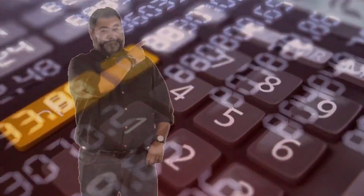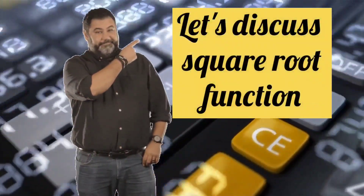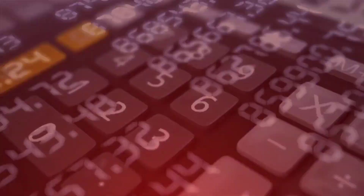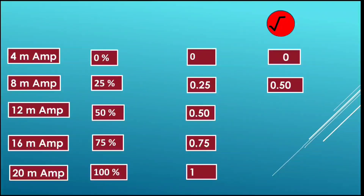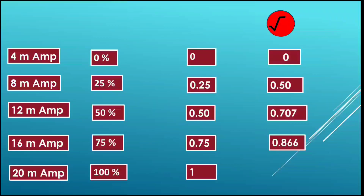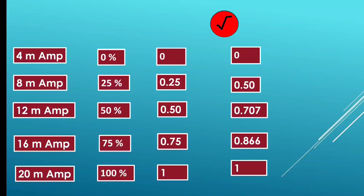Let us now understand the square root function according to the normalized values. The square root of 0 will be 0. Square root of 0.25 will be 0.5. The square root of 0.5 would be 0.707. The square root of 0.75 would be 0.866. The square root of 1 will be 1. These become the square roots for the normalized values.